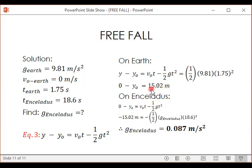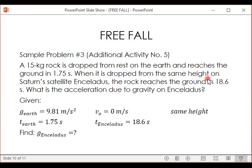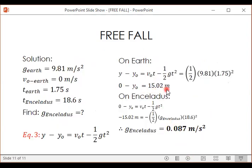Okay. So that means, since it says in our problem 'from the same height', dropped from the same height, so this 15.02 meters is what we'll also use to solve for the gravitational acceleration on Enceladus.